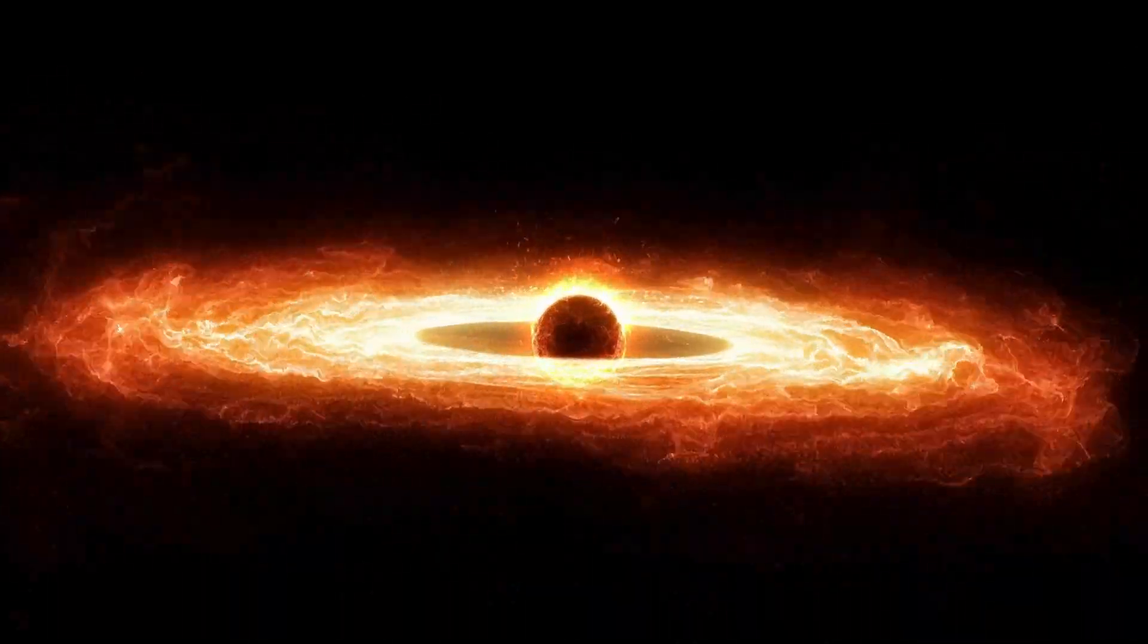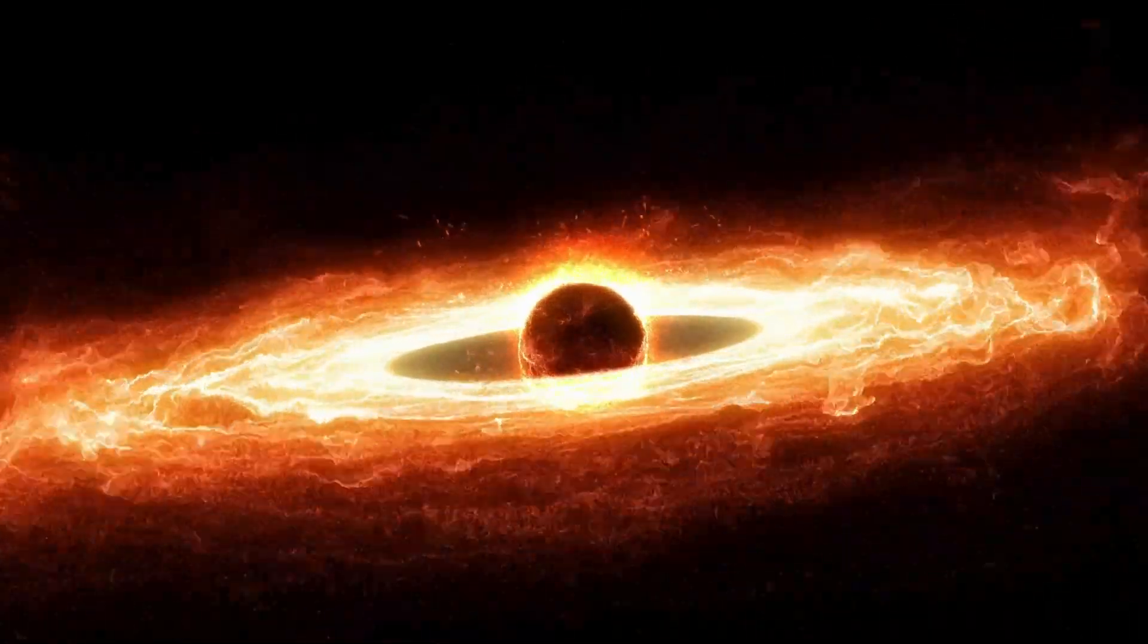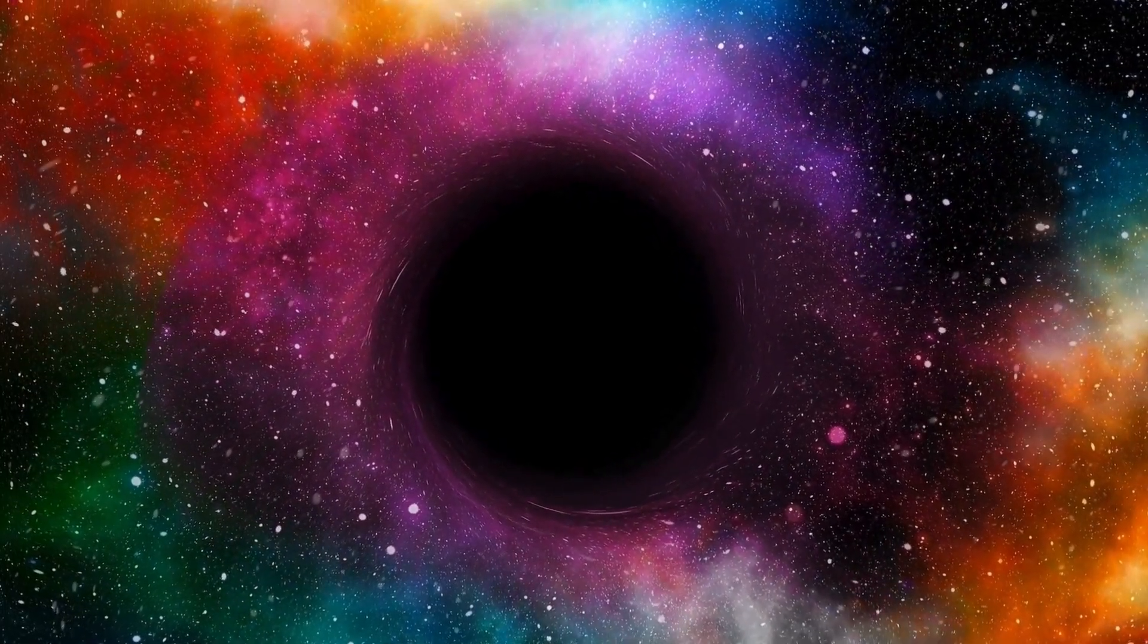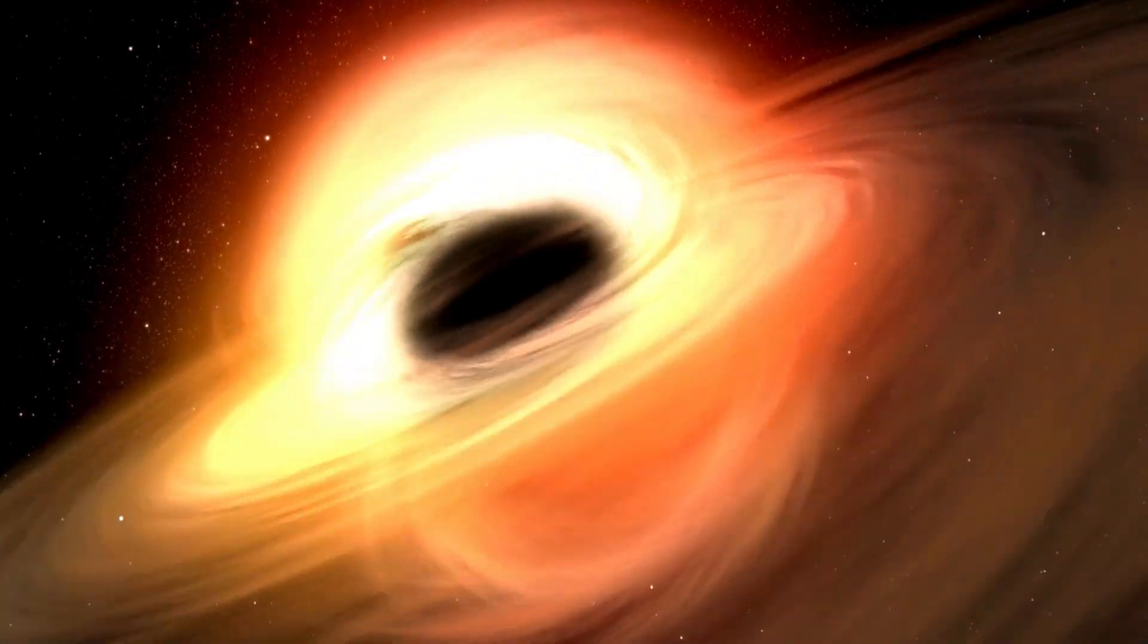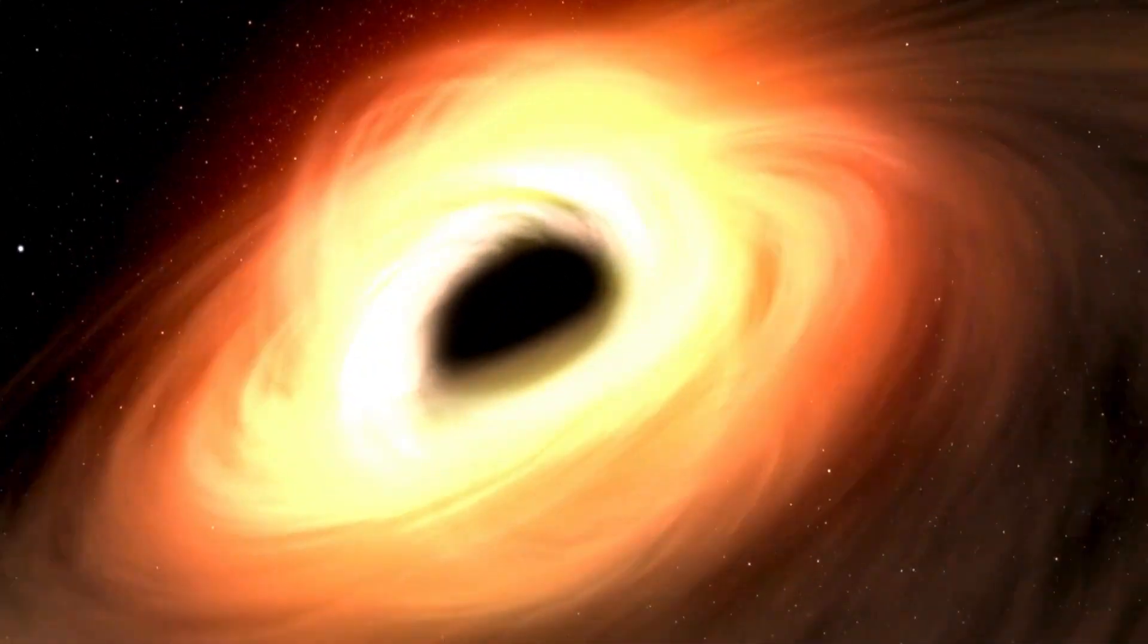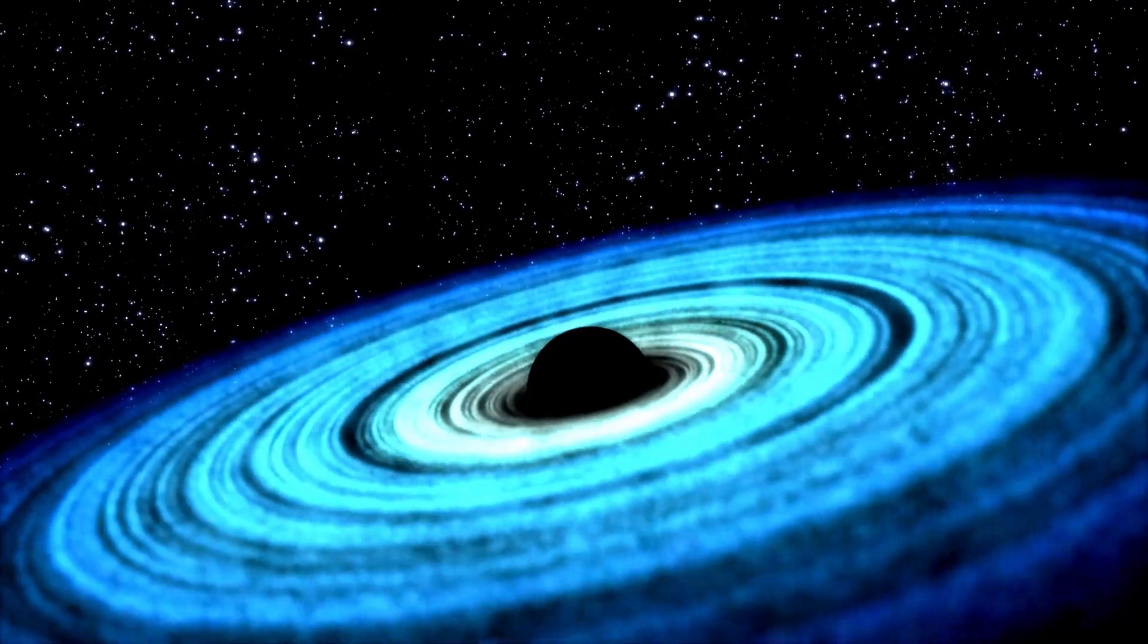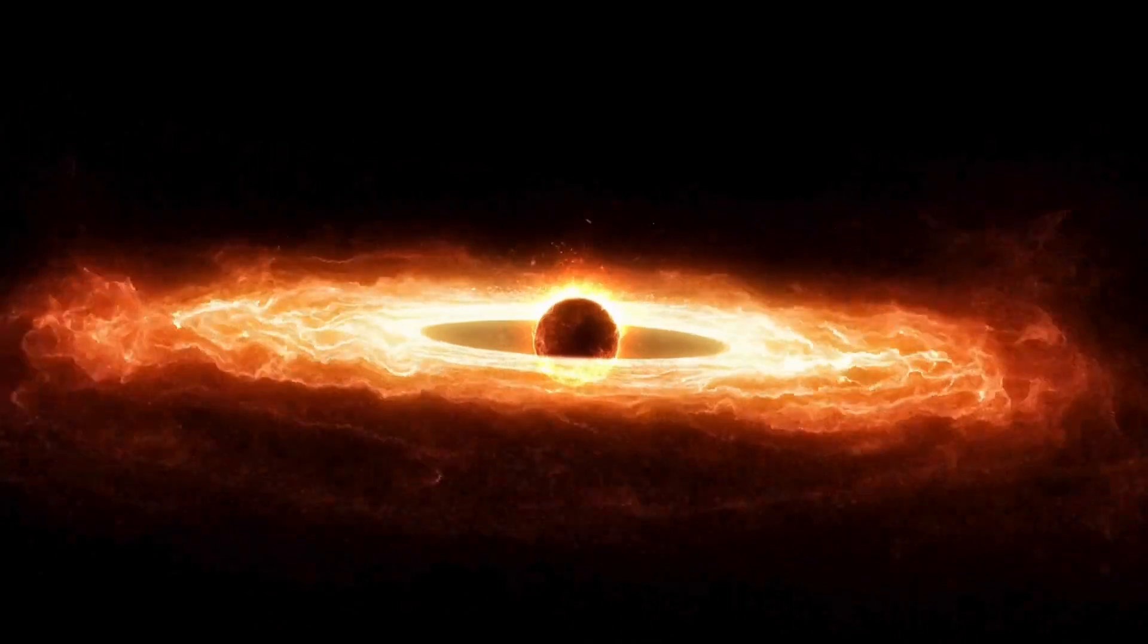The grandeur of black hole genesis unravels in diverse forms, contingent upon their size and cosmic lineage. These mysteries might emerge from the ashes of colossal stars, their cores imploding under the weight of their ambitions, or through the surreptitious convergence of galaxies, orchestrating the emergence of supermassive black holes, cosmic leviathans lurking at galactic hearts. The most prevalent kind of black hole, known as a stellar black hole, takes shape when a massive star exhausts its cosmic fuel and collapses in on itself due to its overwhelming gravitational embrace.